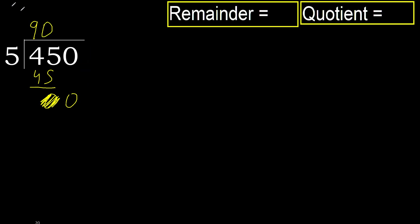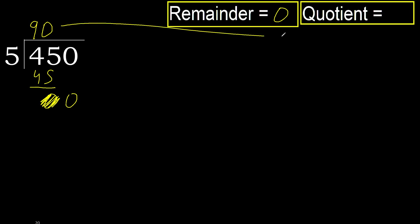Therefore complete. Always complete with 0. Complete with 0 because here we finish it with this number. 450 divided by 5 is 90.